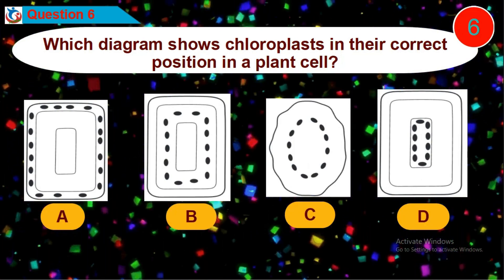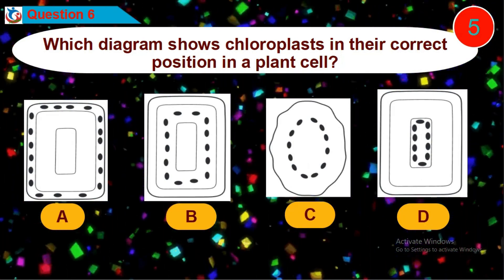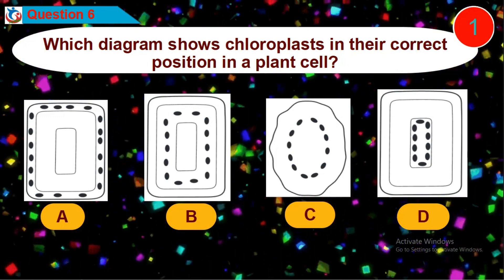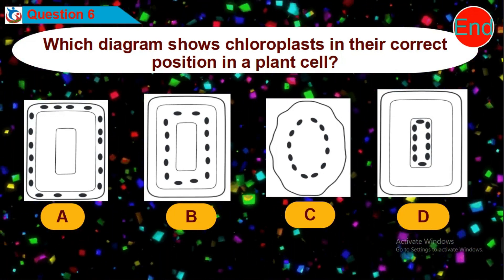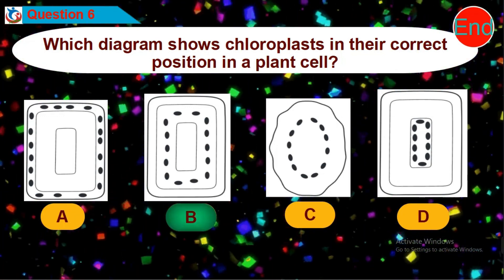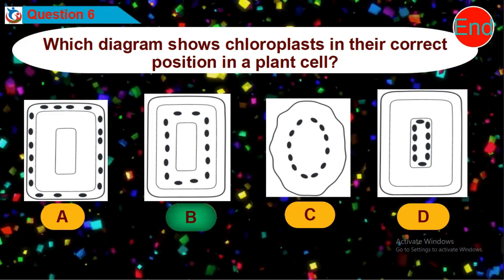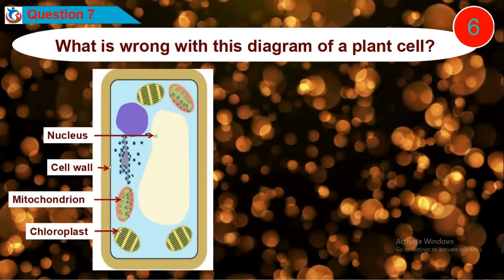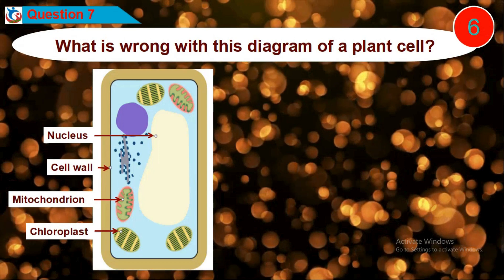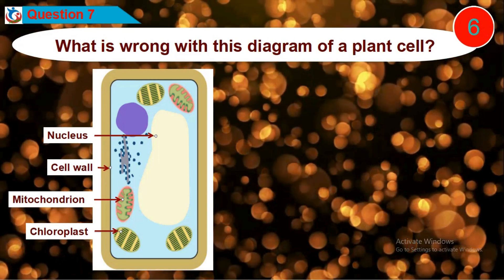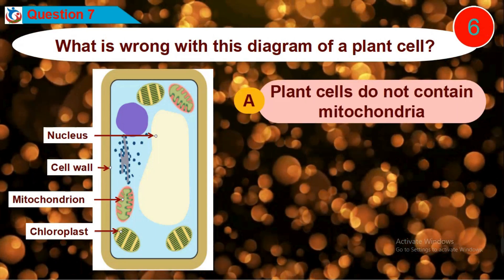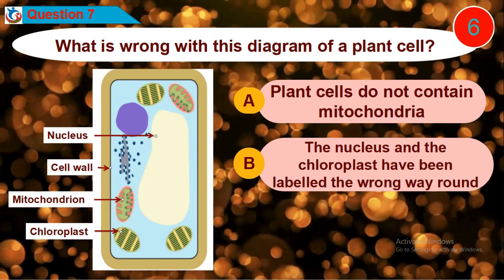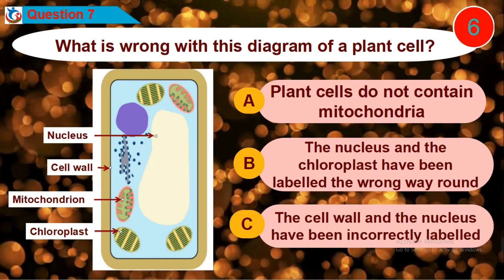Question 7: What is wrong with this diagram of a plant cell? Is it option A, B, C, or D?